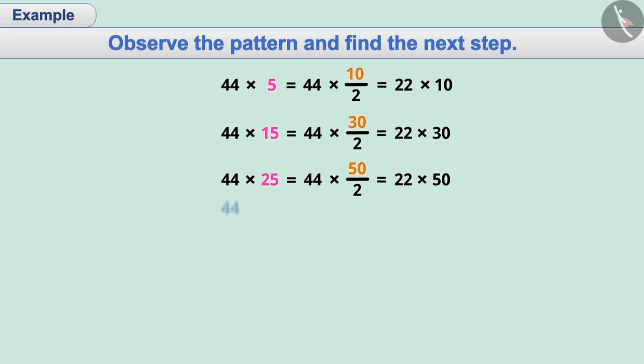Therefore, the next step is 44 multiplied by 35 which can be expressed by the fraction 70 by 2. Then, we will divide 44 by 2 and the quotient 22 is multiplied by 70 which can be expressed as 22 multiplied by 70.